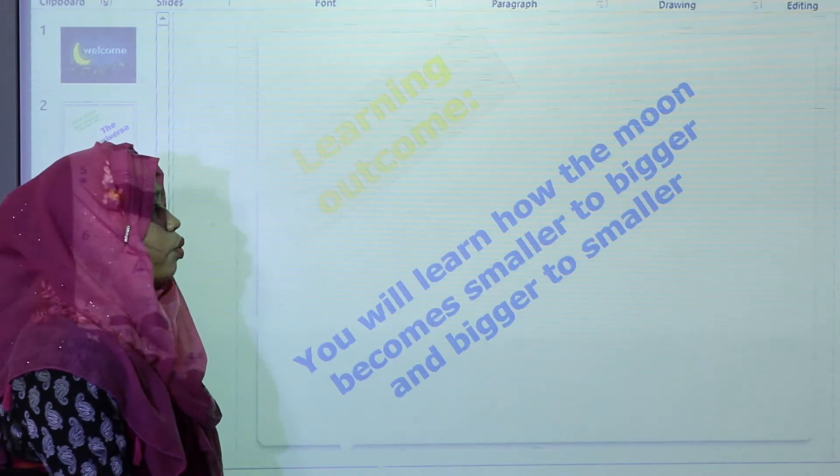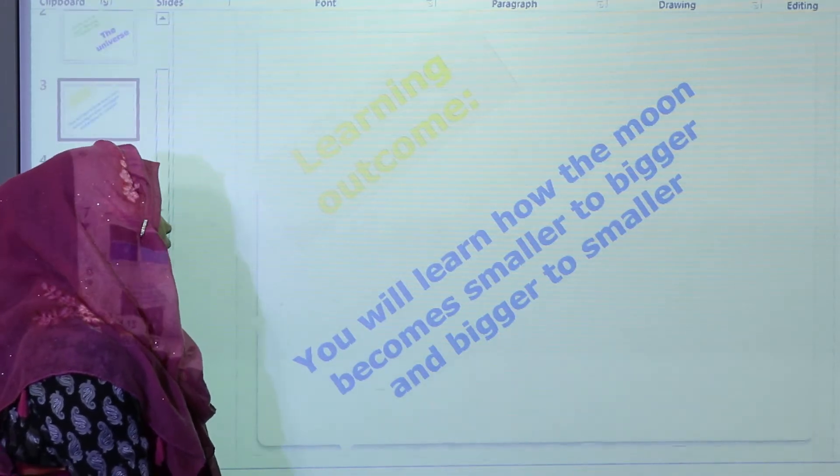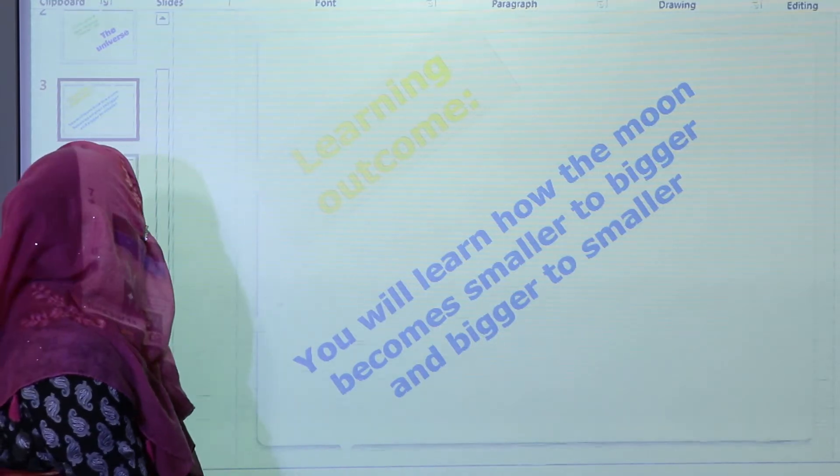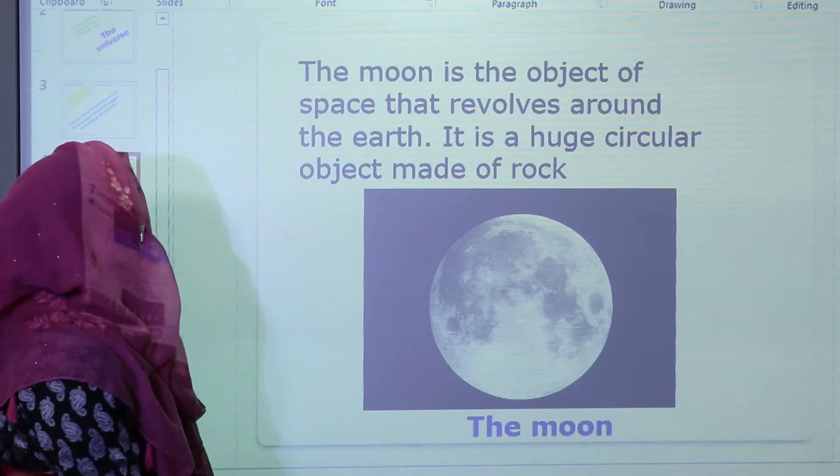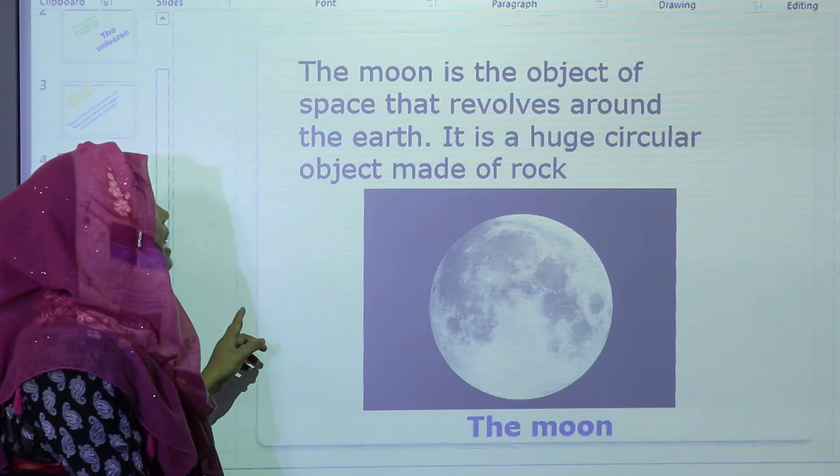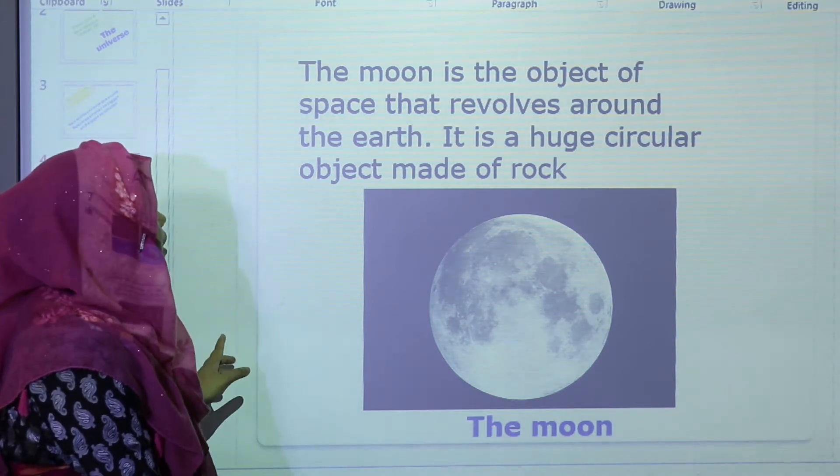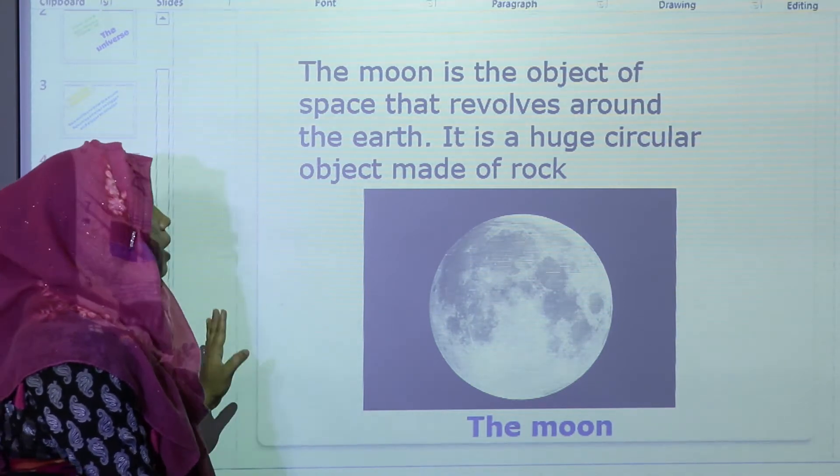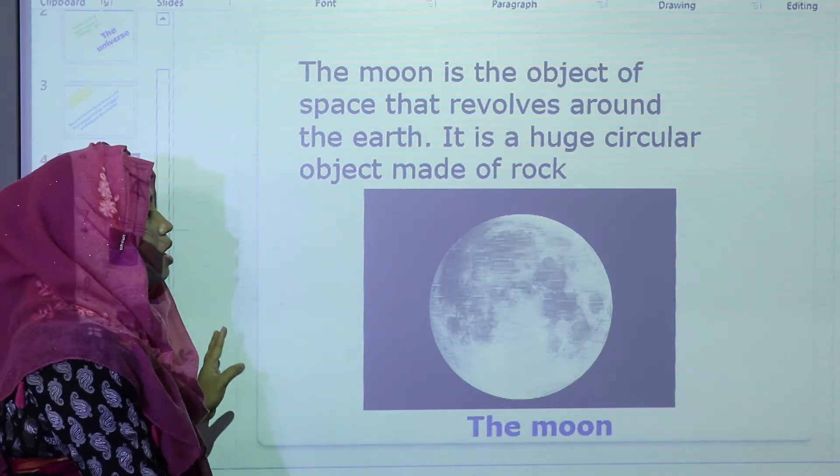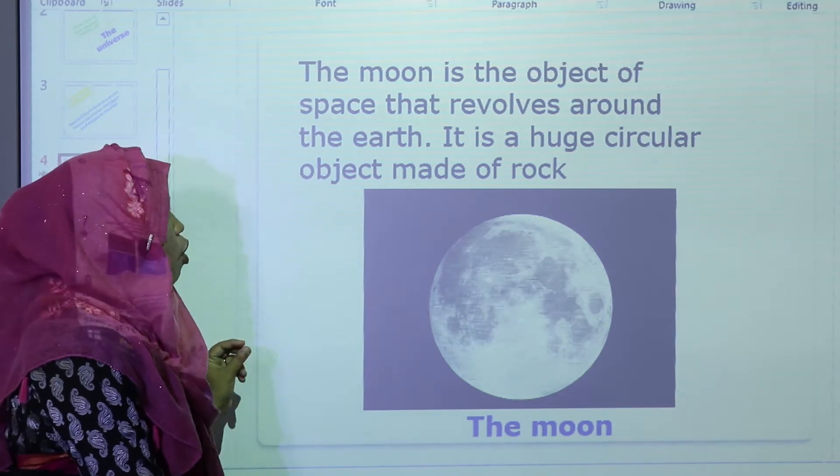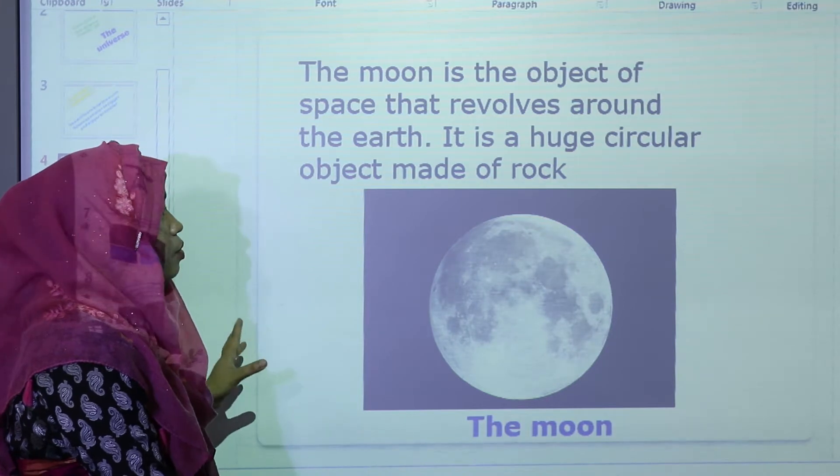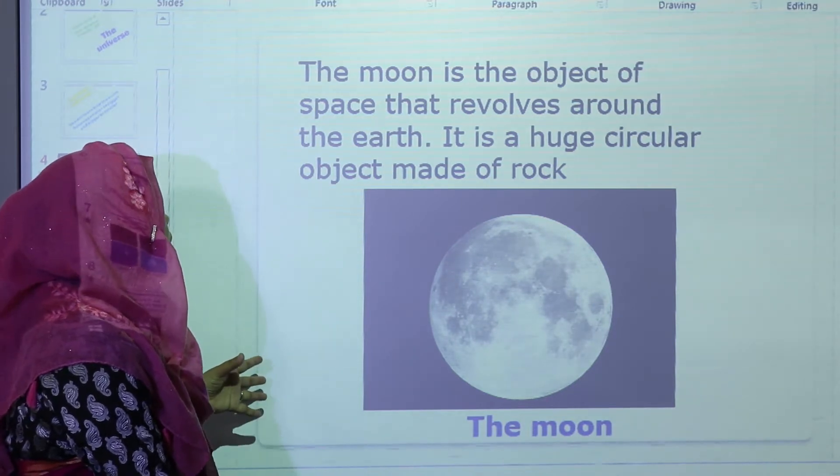How the moon appears bigger then smaller, and smaller then bigger - this means the shape of the moon seems to change. The moon is the object of space that revolves around the earth. It is a huge circular object made of rocks. If you look at the sky, we see the moon and you also see some black spots in the moon. It's not a black spot, it's various types of objects like rocks, ash, gas, everything.